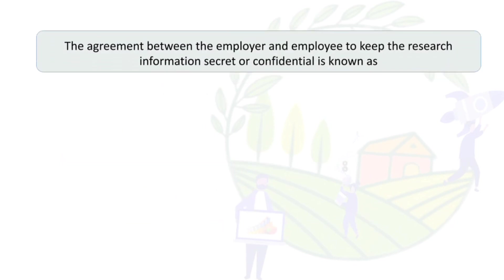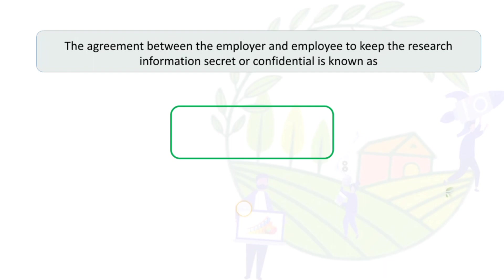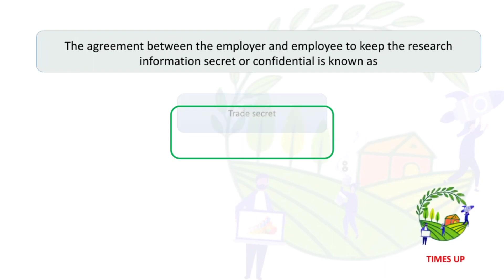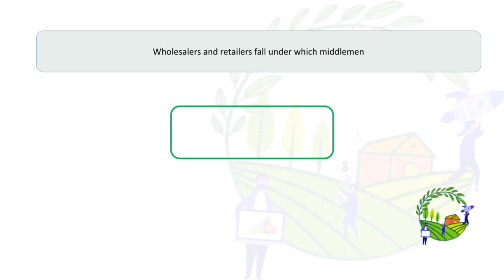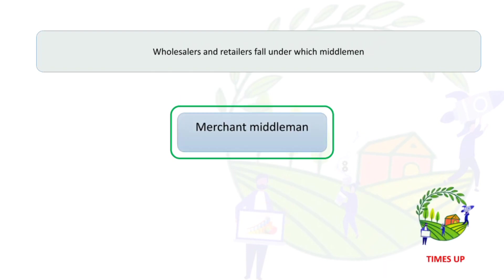The agreement between employer and employee to keep research information secret or confidential is known as a trade secret. Wholesalers and retailers fall under which type of middlemen? The answer is merchant middlemen.